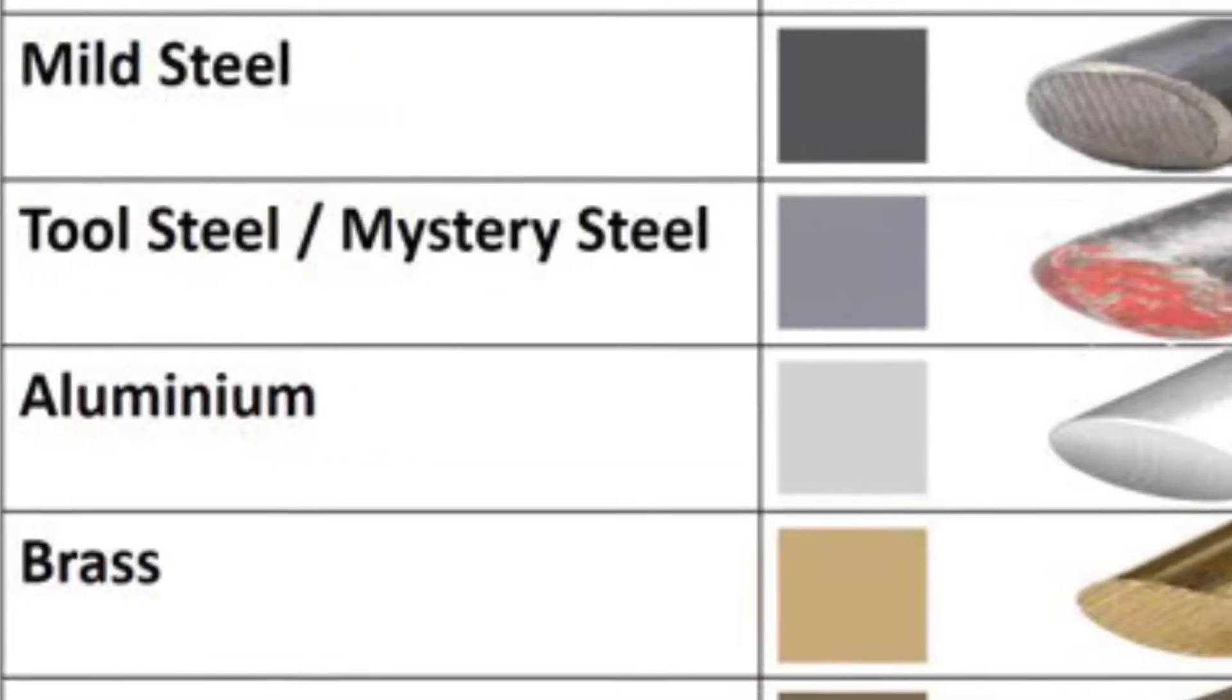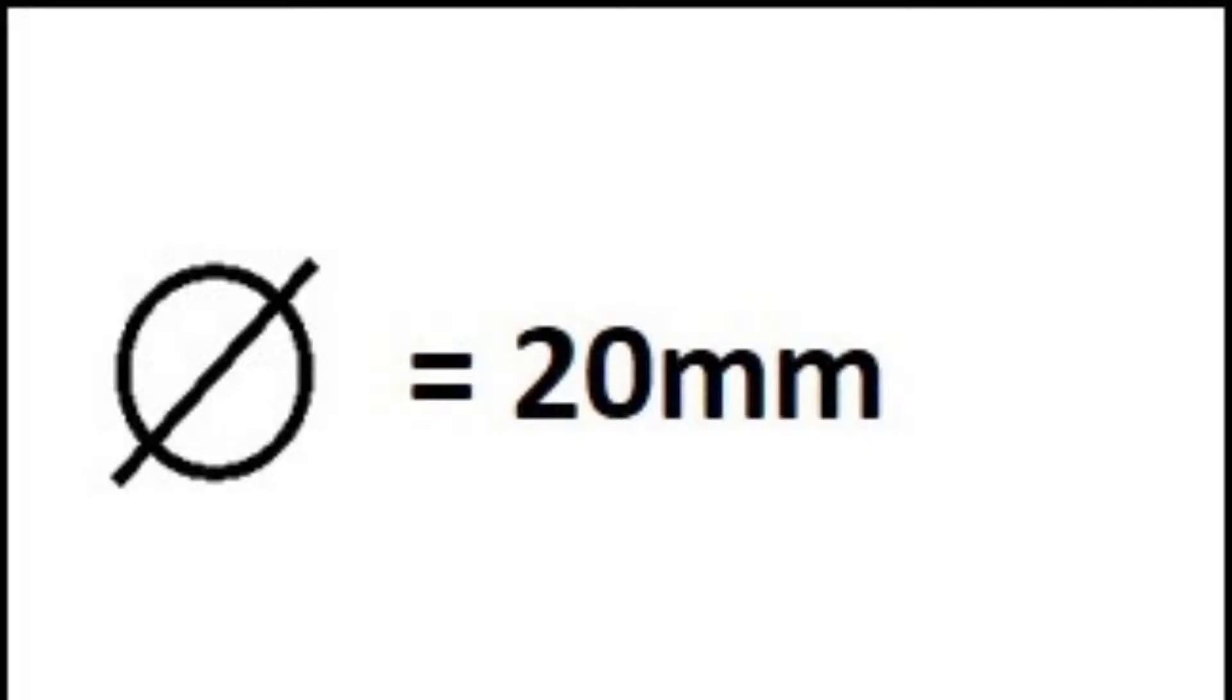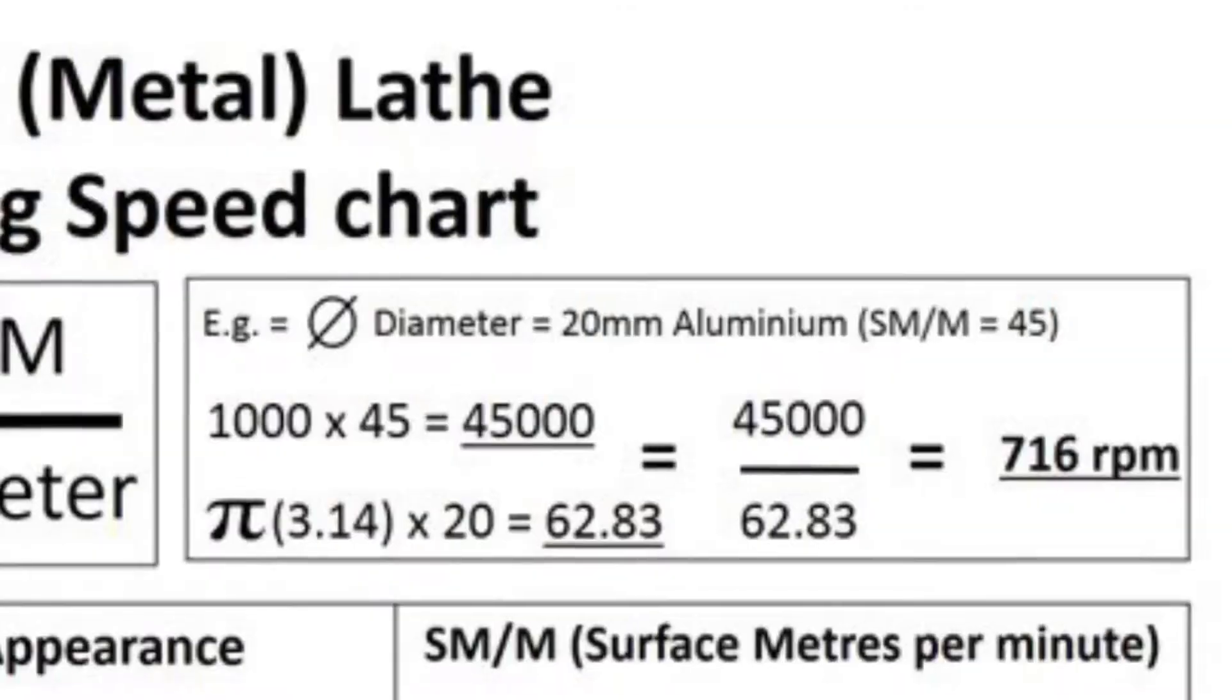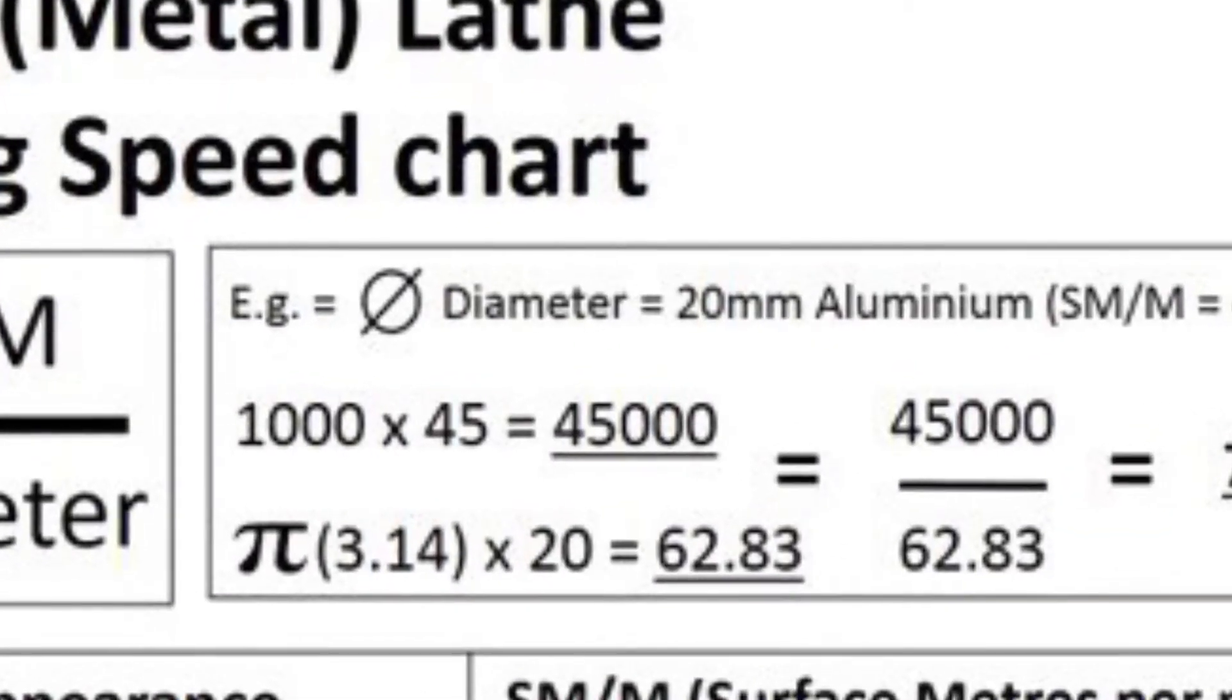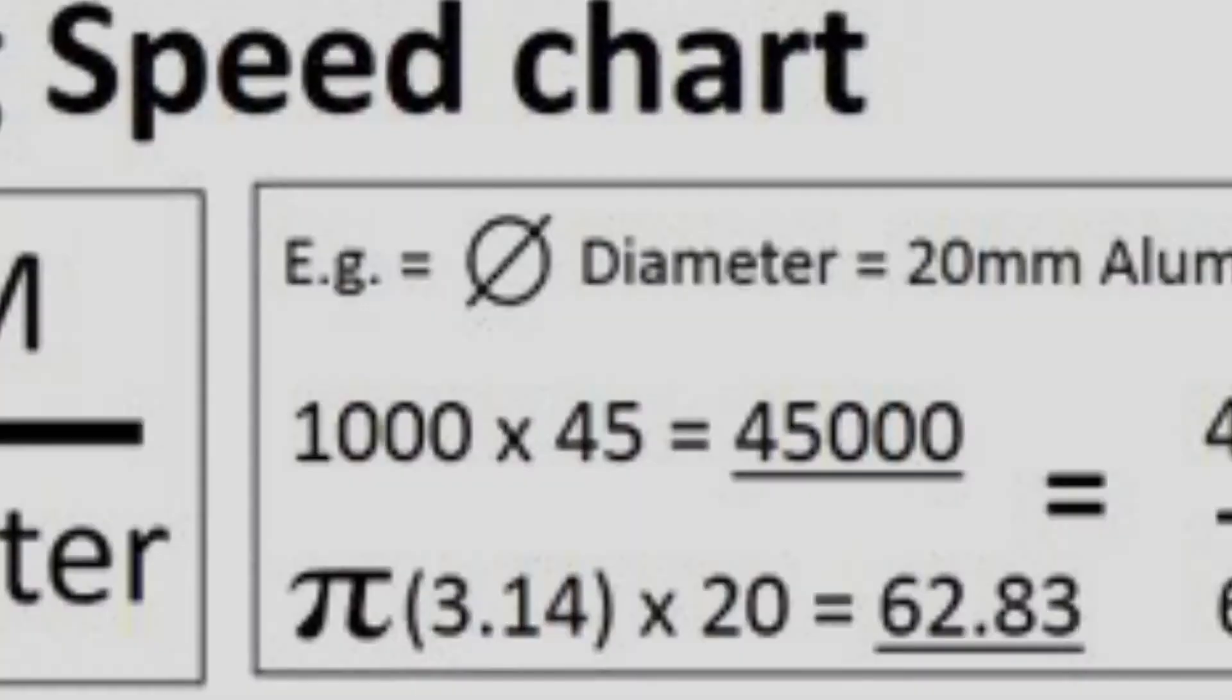For example, aluminium should be cut at a speed of 45 surface metres per minute. If a piece of material being machined on a lathe had a diameter of 20 millimetres, the calculation would be 1000 times the surface metres per minute value 45 equals 45,000.